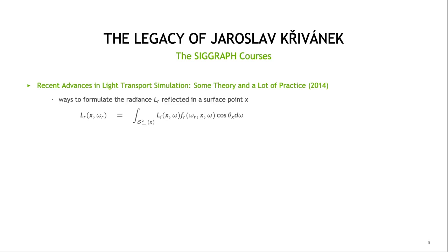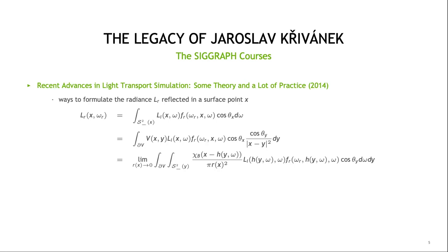Besides practice, Jaroslav very successfully drove the rendering and Monte Carlo methods field. Production rendering companies were highly interested in his algorithms, and he had been sharing his work throughout industry in addition to academia. Rendering algorithm research reached a new level by exploring more abstract approaches and unification. As a brief example, let's look at the reflection integral formulated as integration over the hemisphere — its formulation over the surface has been known for long as the basis of algorithms like multiple importance sampling. New then was the formulation of photon mapping in integral form.